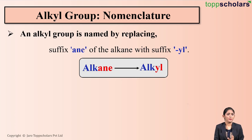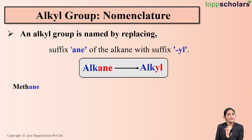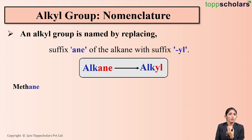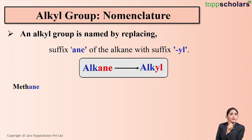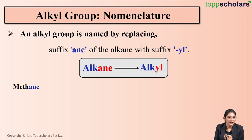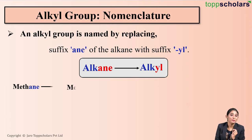Let's take an example. Here I have methane, which is an alkane. So in order to name the alkyl group, I need to simply replace the suffix '-ane' of methane by '-yl'. So it becomes methyl.